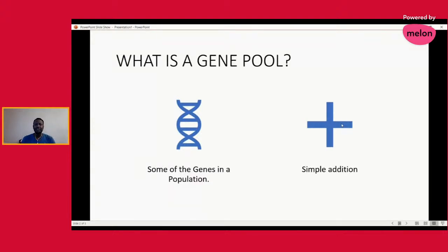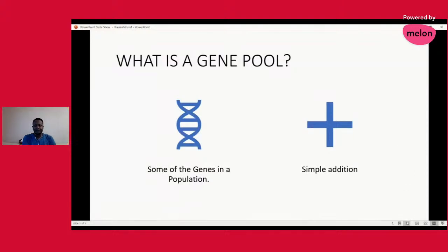So let's say 10 individuals in an African cow population, and each individual has two alleles — two different versions of genes. So two times ten gives you 20, and that will be your gene pool. Your gene pool would be 20. This is just a simple addition of your different alleles.